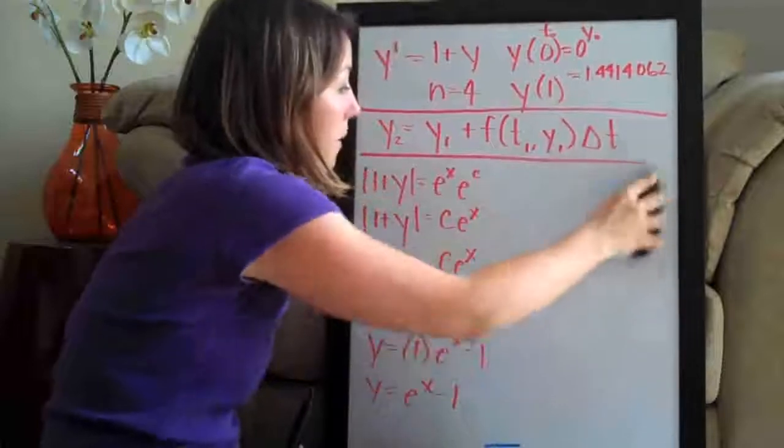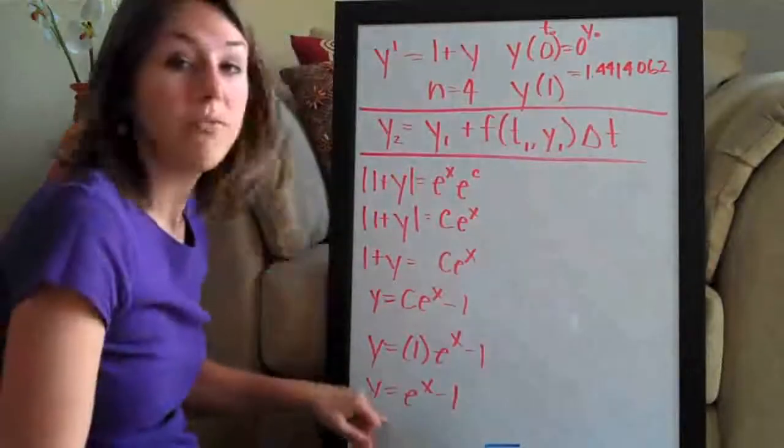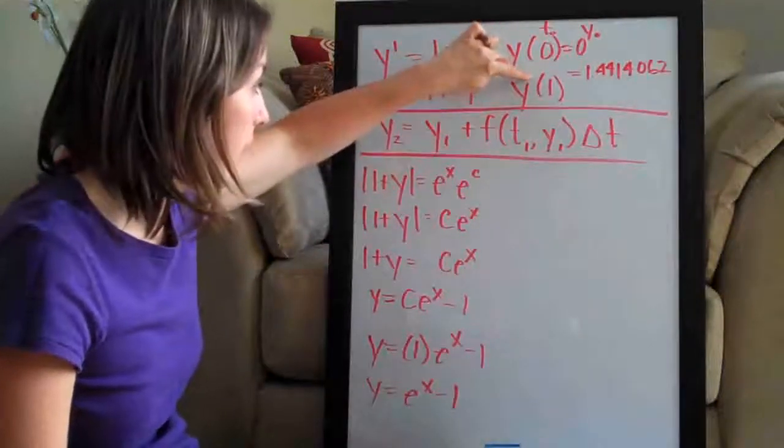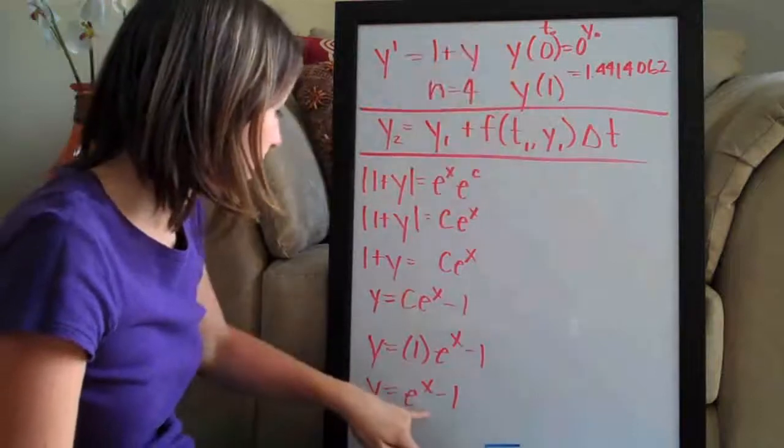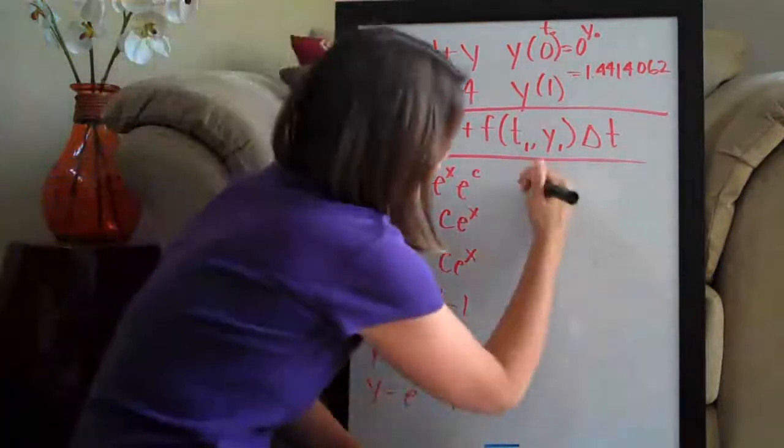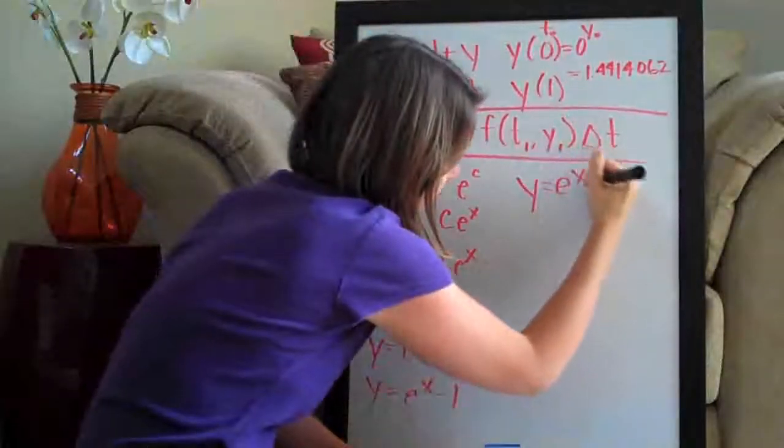That is our final equation and now all we need to do now that we've found the equation using calculus, we plug in 1 for x here and we solve for y. So we've got y equals, I'm just bringing this up here so we can see it better, e to the x minus 1.